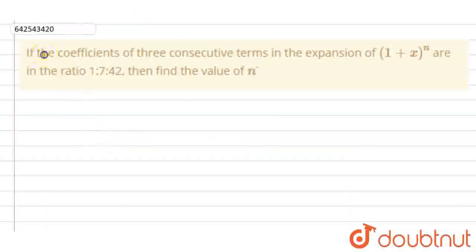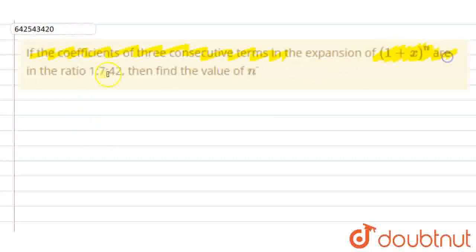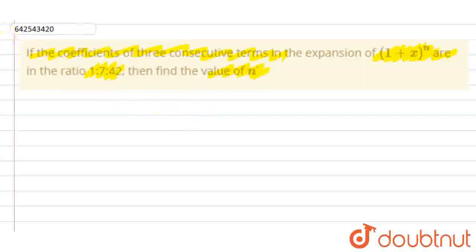Hello students, the question is: if the coefficients of three consecutive terms in the expansion of (1+x)^n are in the ratio 1:7:42, we have to find the value of n.